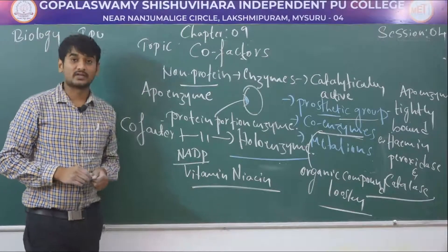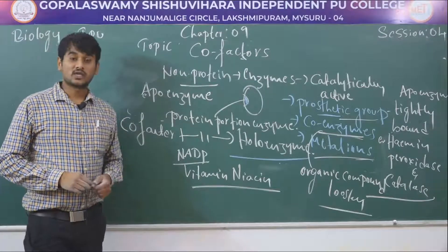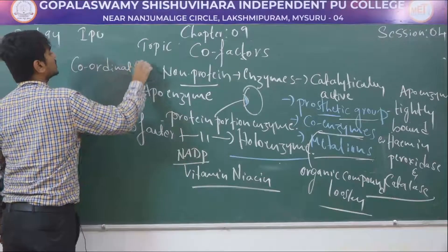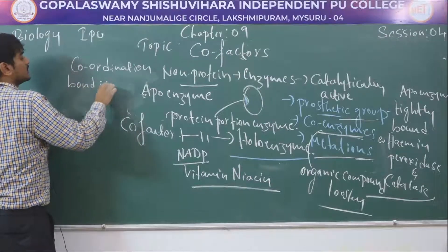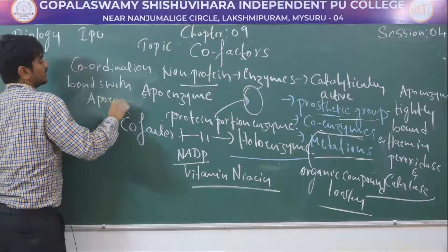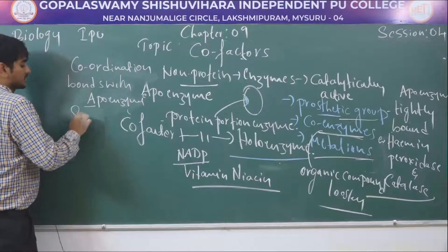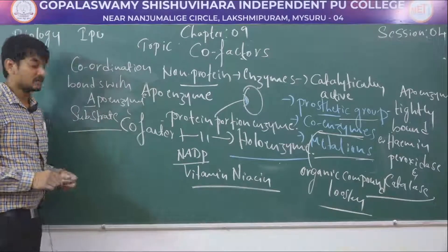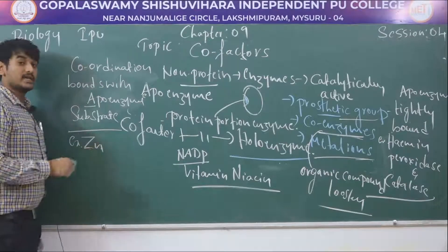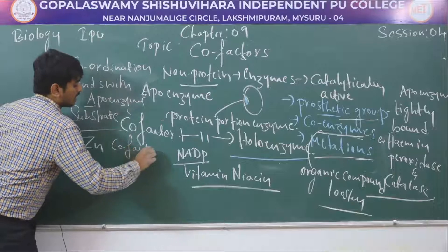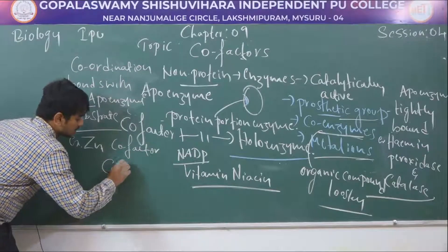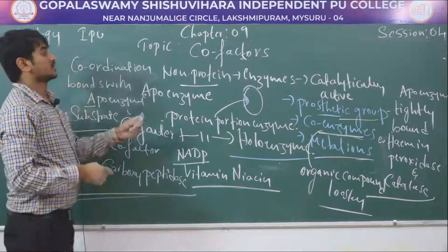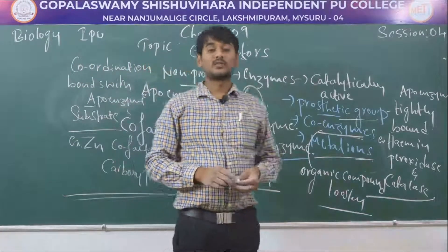The last type of cofactor is metal ions. Metal ions form coordination bonds with the apoenzyme and also with the substrate. For example, zinc is a cofactor in carboxypeptidase.